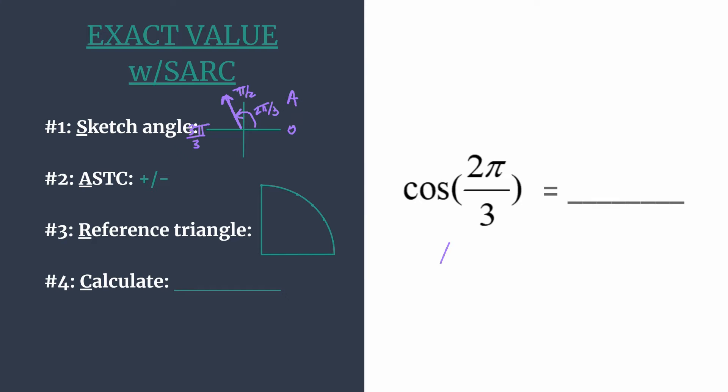So all are positive in the first, sine and its reciprocal cosecant in the second, tangent and its reciprocal cotangent in the third, and cosine and secant in the fourth. So since our angle's terminal side is in the second, only sine and cosecant will be positive.